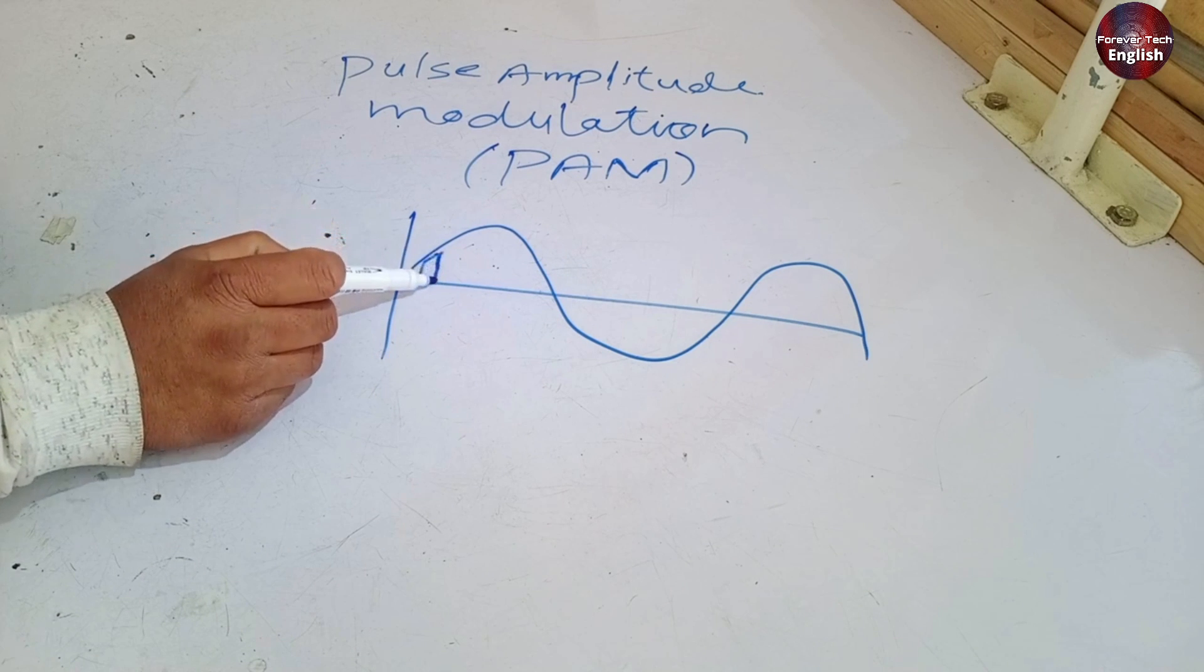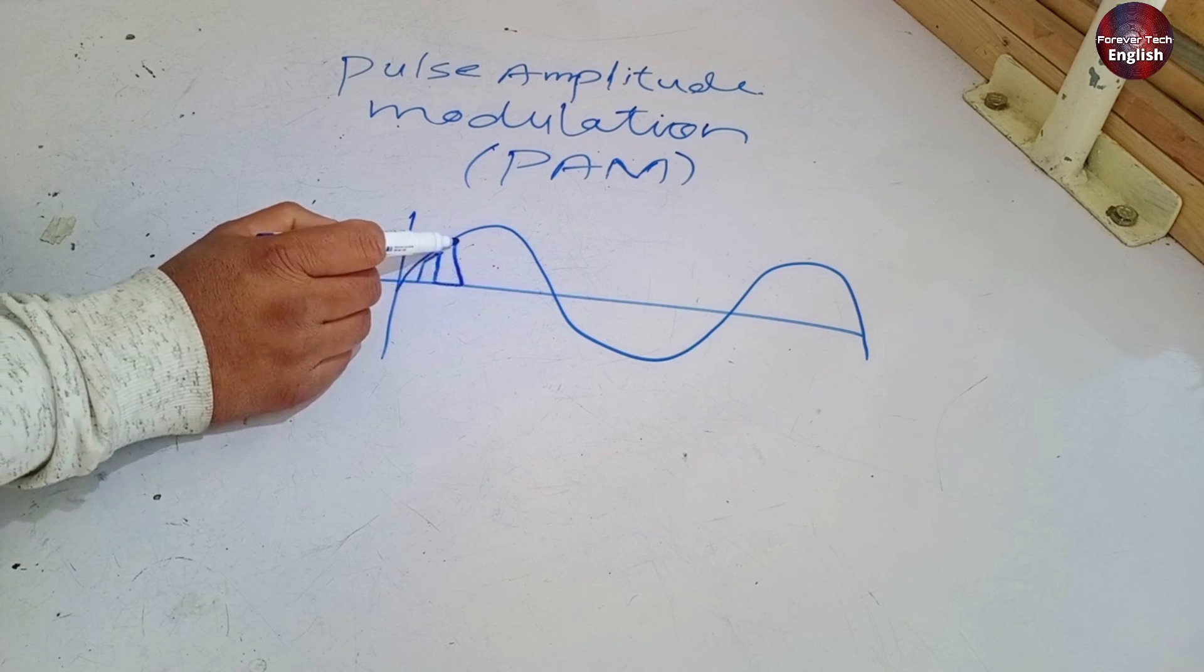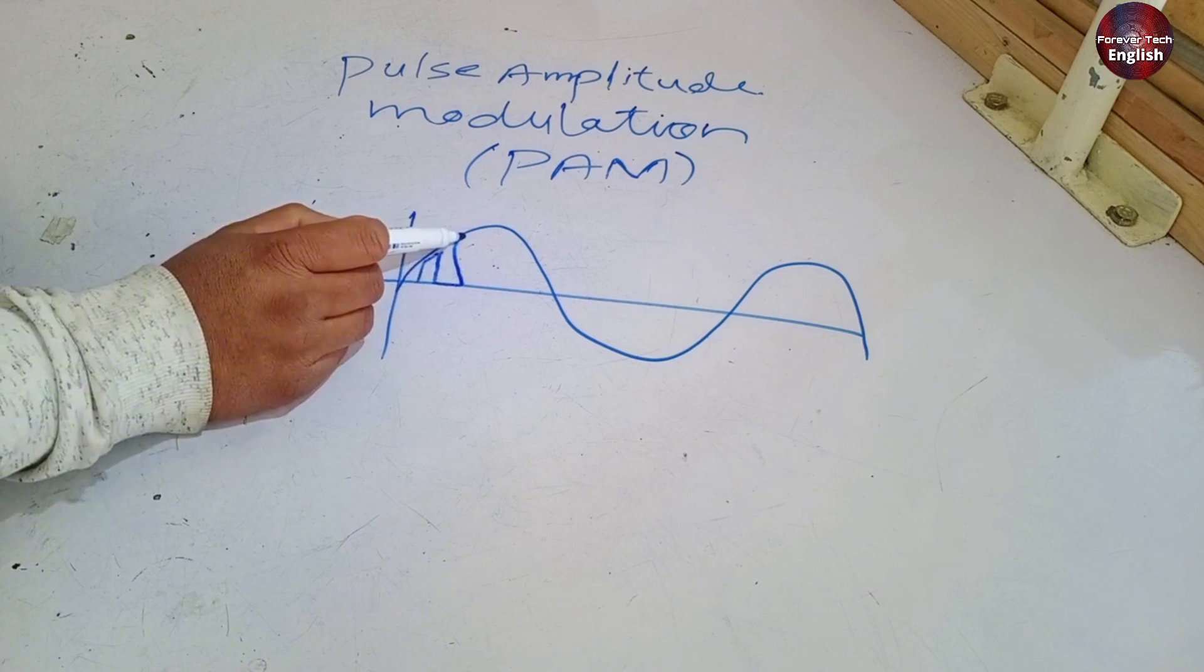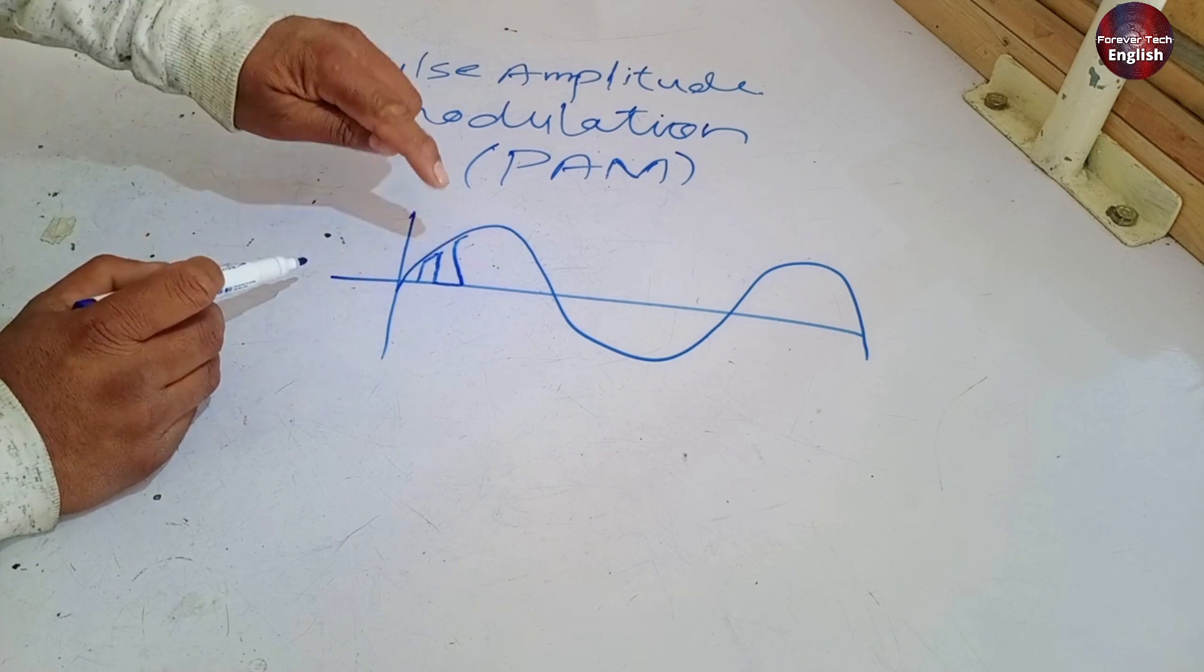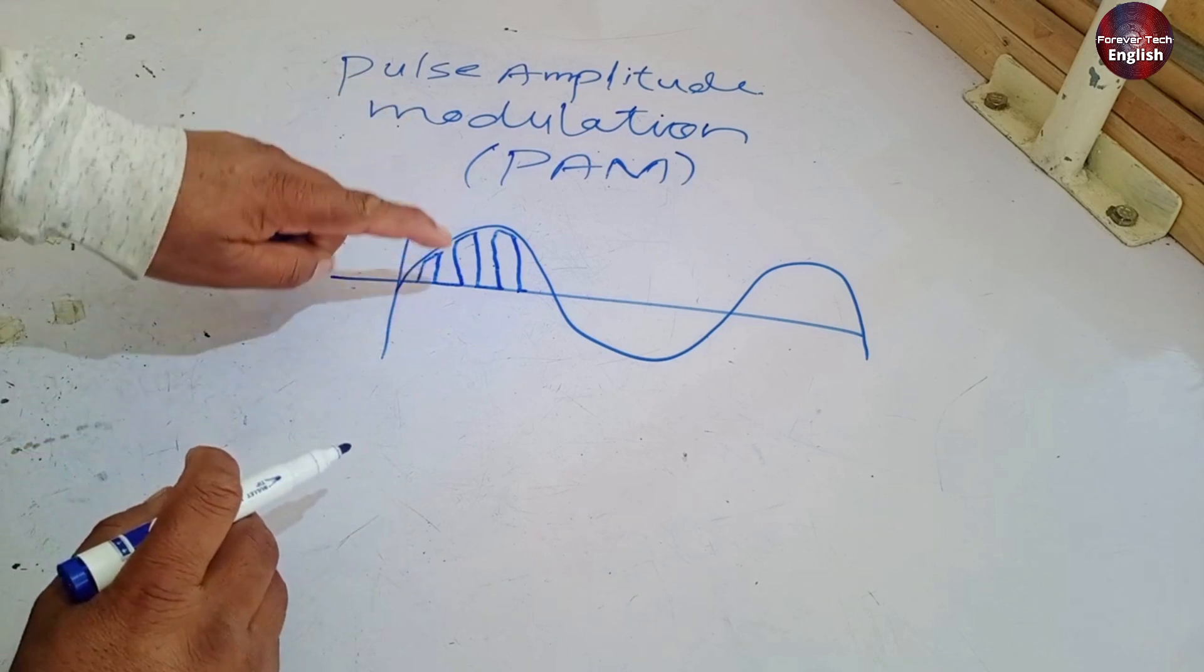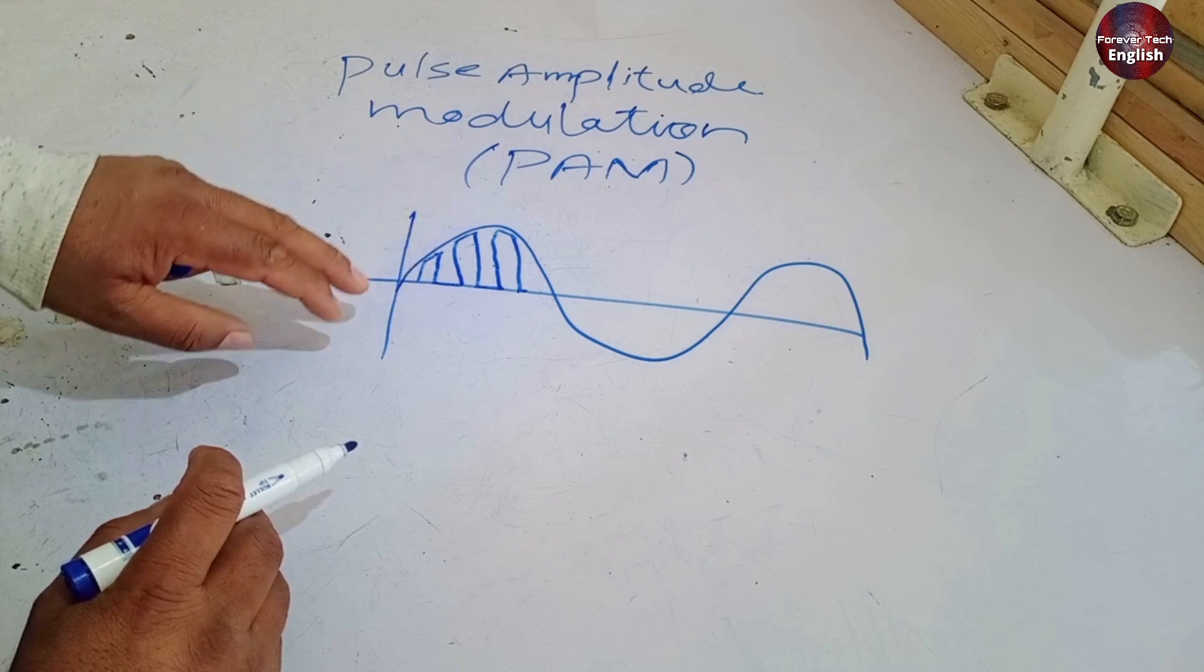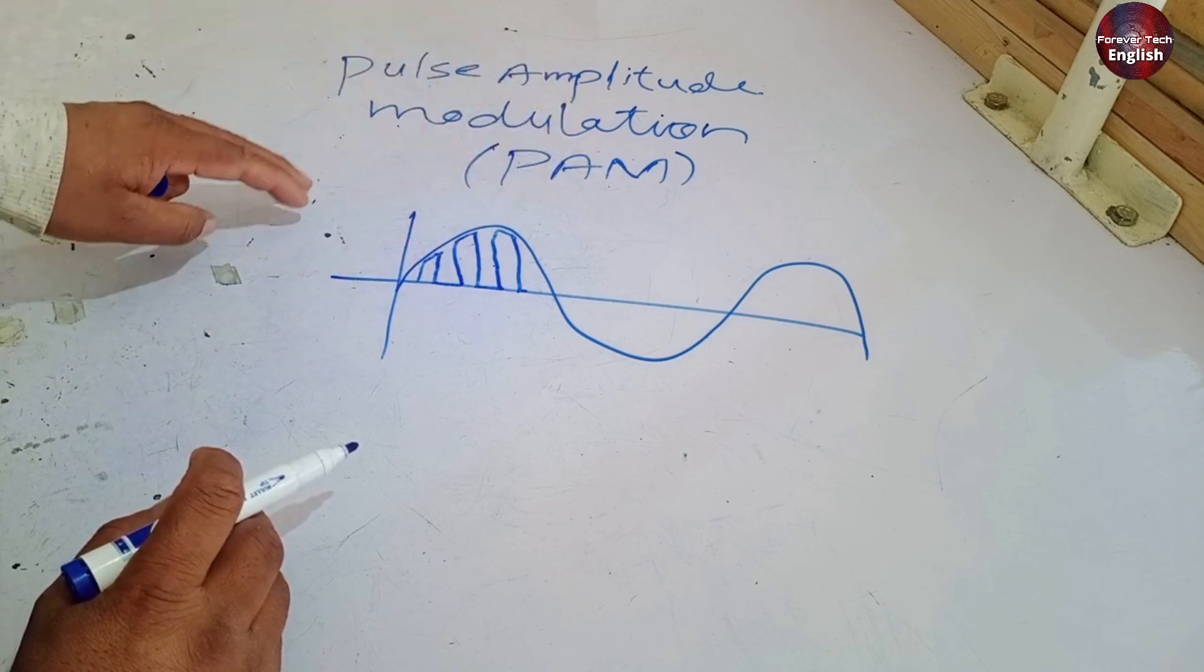After that, it is turned off for a specific time, and then turned on again, generating another wave. This process continues, keeping the current within the sinusoidal waves. Then, the current is turned off again, and this on-off cycle has a set time period. This on-off switching through the IGBT is called pulse amplitude modulation PAM.